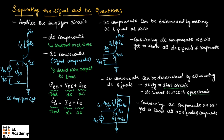You need to remember that if we consider only DC components in a circuit, or if we consider only AC components in a circuit, these are not the complete amplifier circuits. These are just parts of an amplifier circuit. This is about separating the signal and DC quantities. I hope you have understood the topic. Thank you.